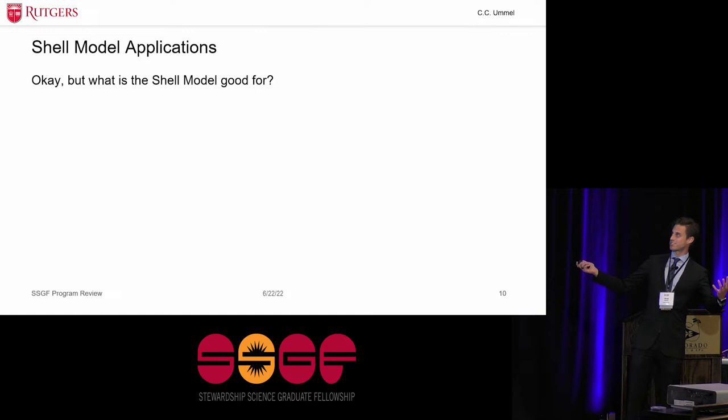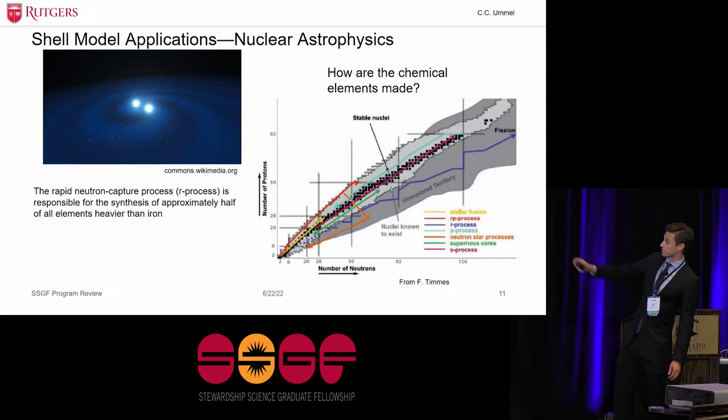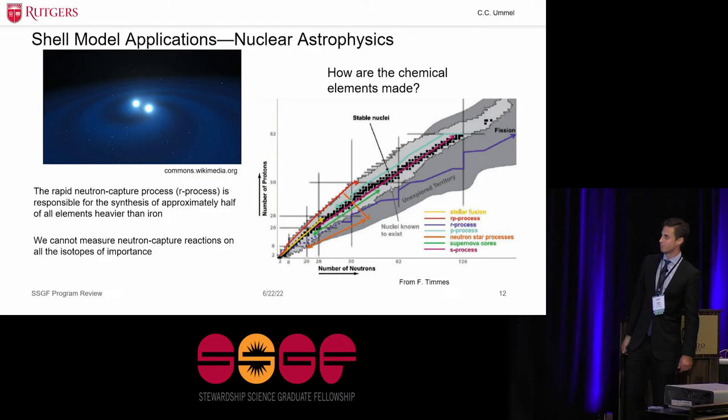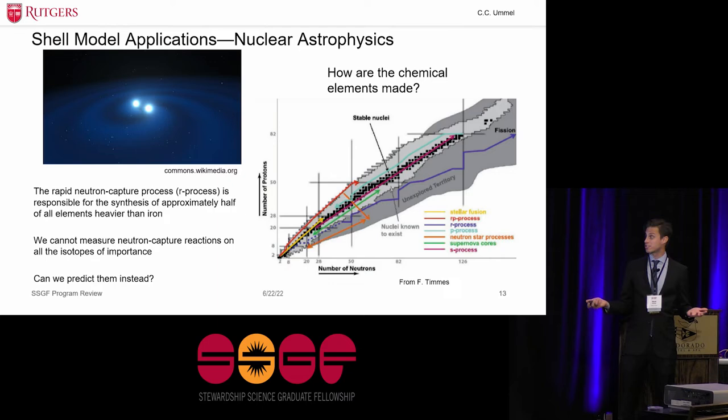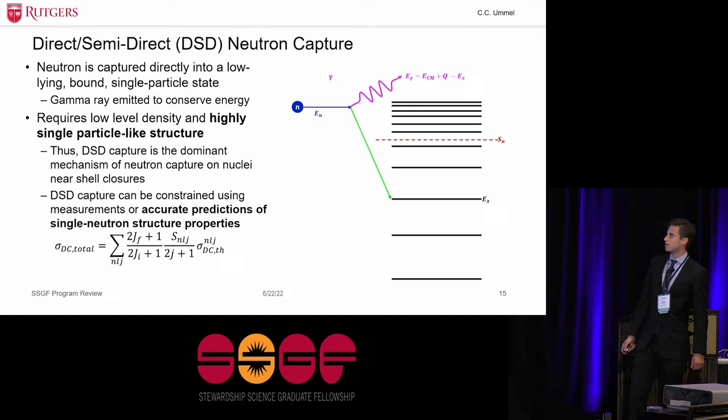So the next question is, what is the shell model good for? What can we use it for? Well, one application I love to talk about is nuclear astrophysics, or probably the question of how chemical elements are made. So this is the chart of nuclides. It's plotting isotopes as a function of neutron number and proton number. Stable isotopes are in black here. The process I like to talk about most is this indigo arrow here, which is the R process. That's the rapid neutron capture process. It's believed to be responsible for the synthesis of about half of all elements heavier than iron. And you'll notice that it's way out in this dark gray region called unexplored territory. So most of these isotopes are in a region that we really can't measure reactions on them. And so instead, we need to make predictions about what those reaction rates might be. Similarly, for stockpile stewardship, you again need to know about nuclear reactions on highly unstable isotopes, and you need to be able to make predictions about them in lieu of being able to do measurements on very short-lived radionuclides.